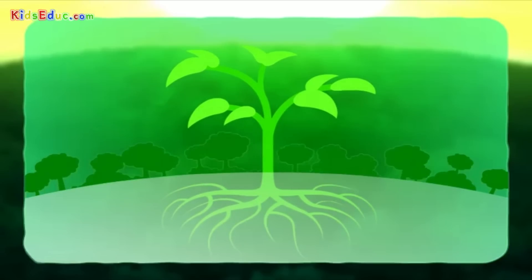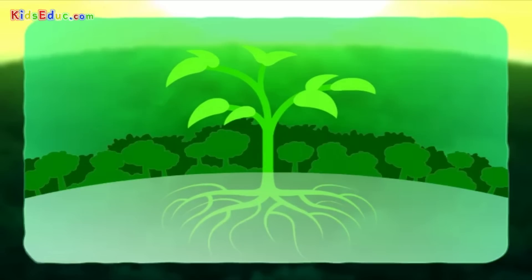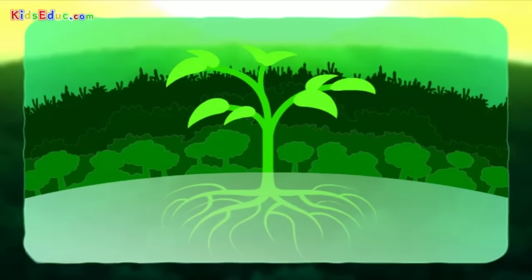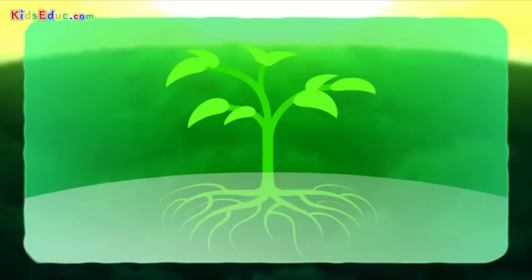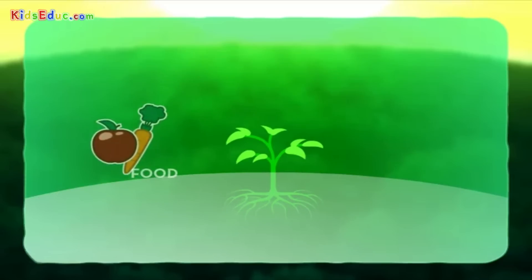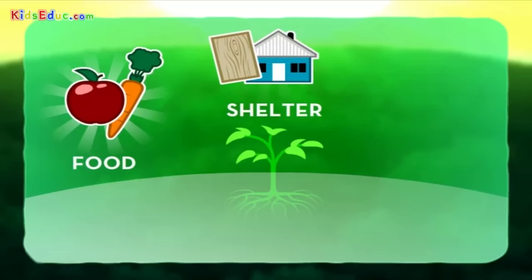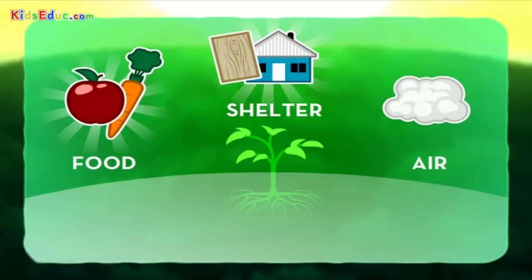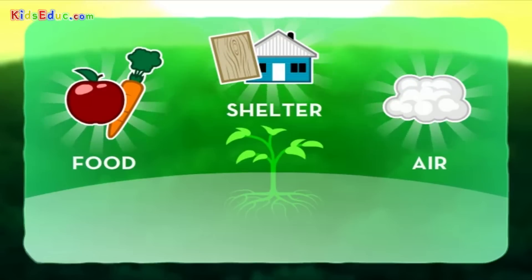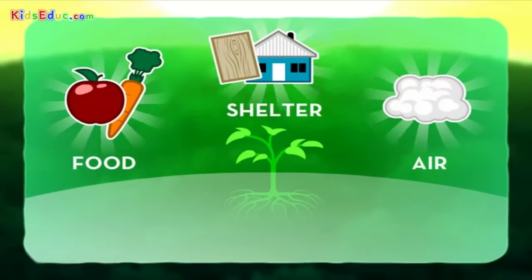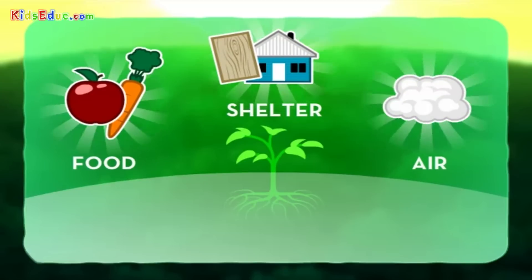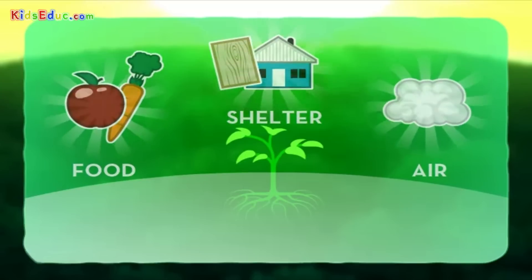Earth supports over 300,000 kinds of plants, and plants in turn support life. From a source of food, to providing materials for shelter, to providing the very air that we breathe, plants are an essential foundation of life.